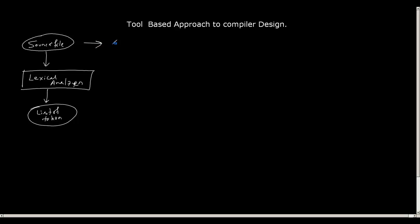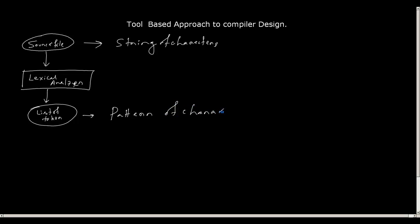The source file is nothing but a string of characters, and the list of tokens is a pattern of characters. For example, 'int' is a pattern, 'char' is another pattern, 'float' is another pattern, and so on. Given a string of characters, the job of the lexical analyzer is to find these patterns. If it finds anything other than these patterns, it should report an error as an invalid token.